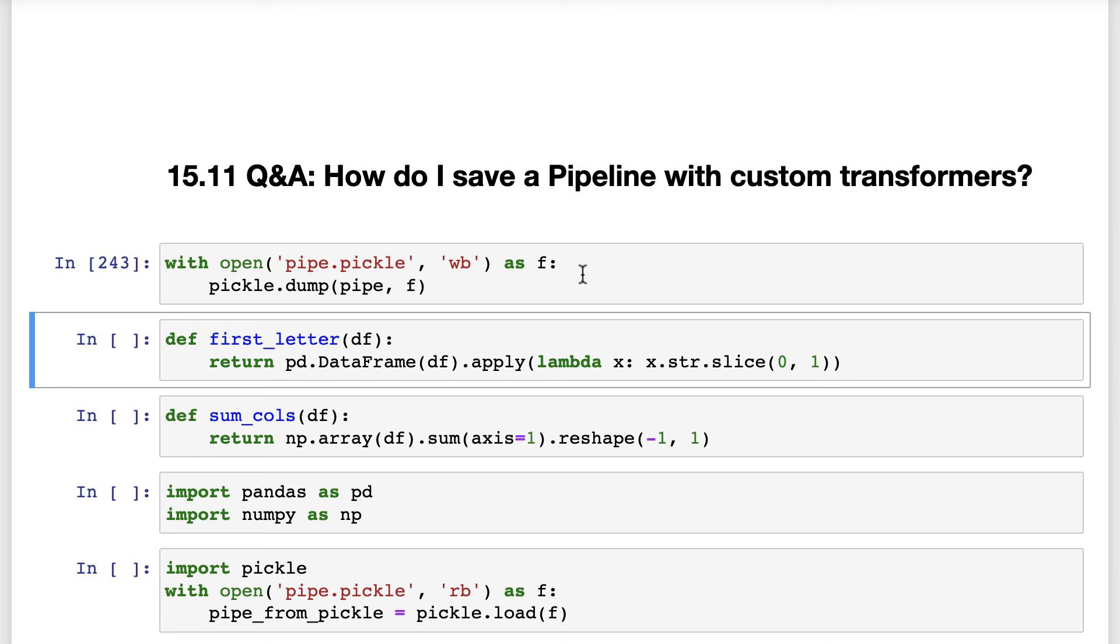Because the pipeline includes custom transformers, which use the first_letter and sum_cols functions, those two functions need to be defined in the new environment.